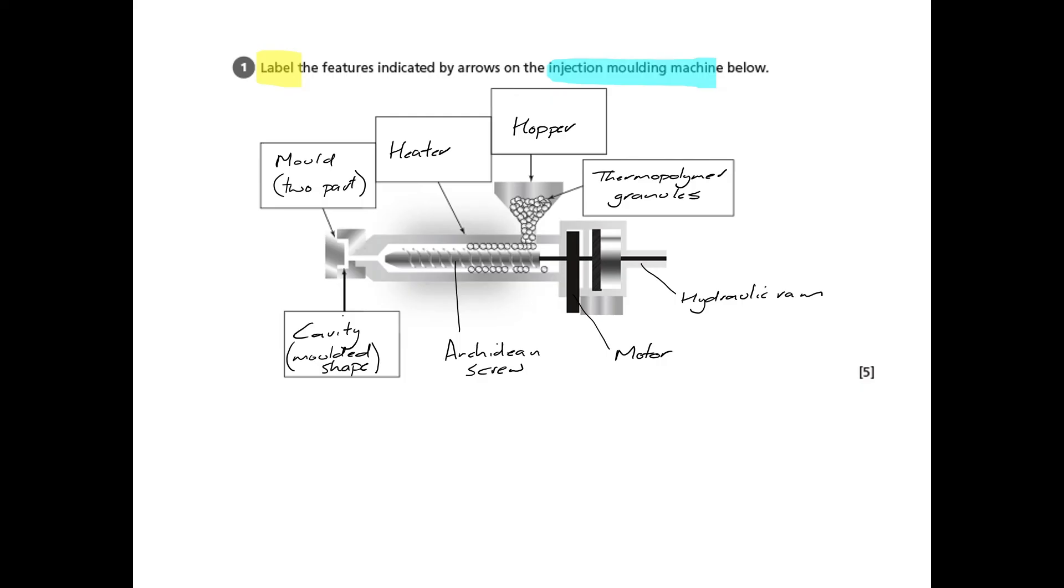Other questions that relate to injection molding might include a description of the process, and that's probably going to be an 11 or 12 marker. But this is a relatively simple question where you just need to put in these key parts of the injection molding machine.